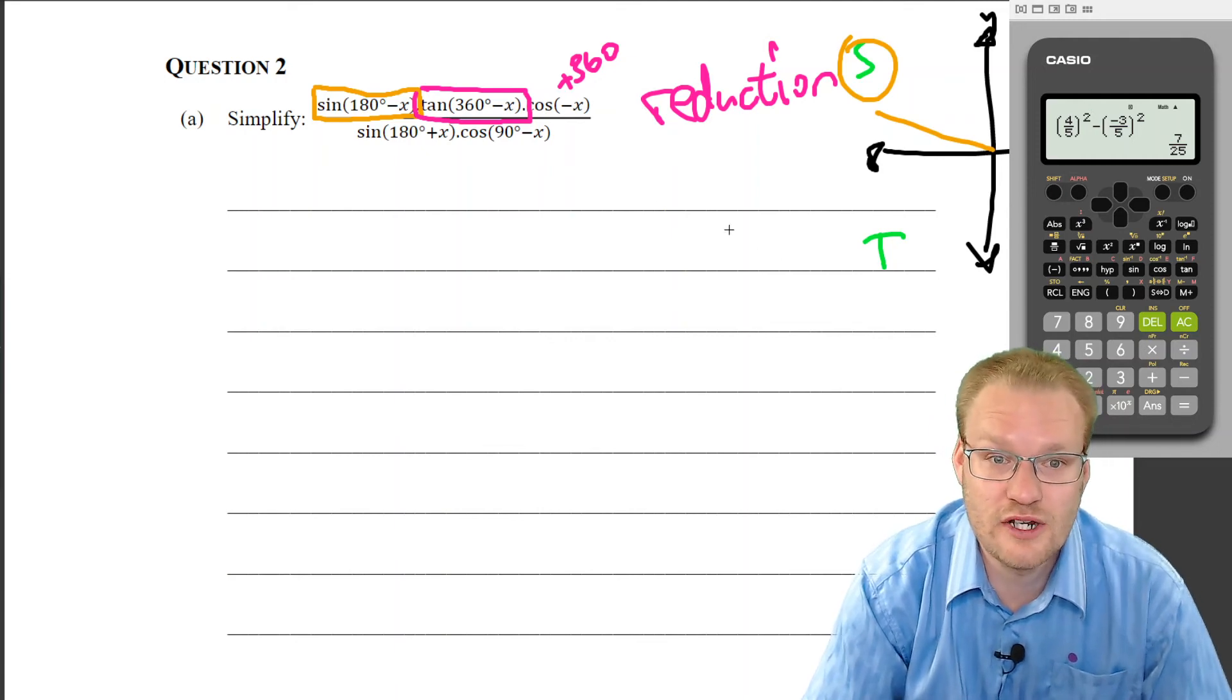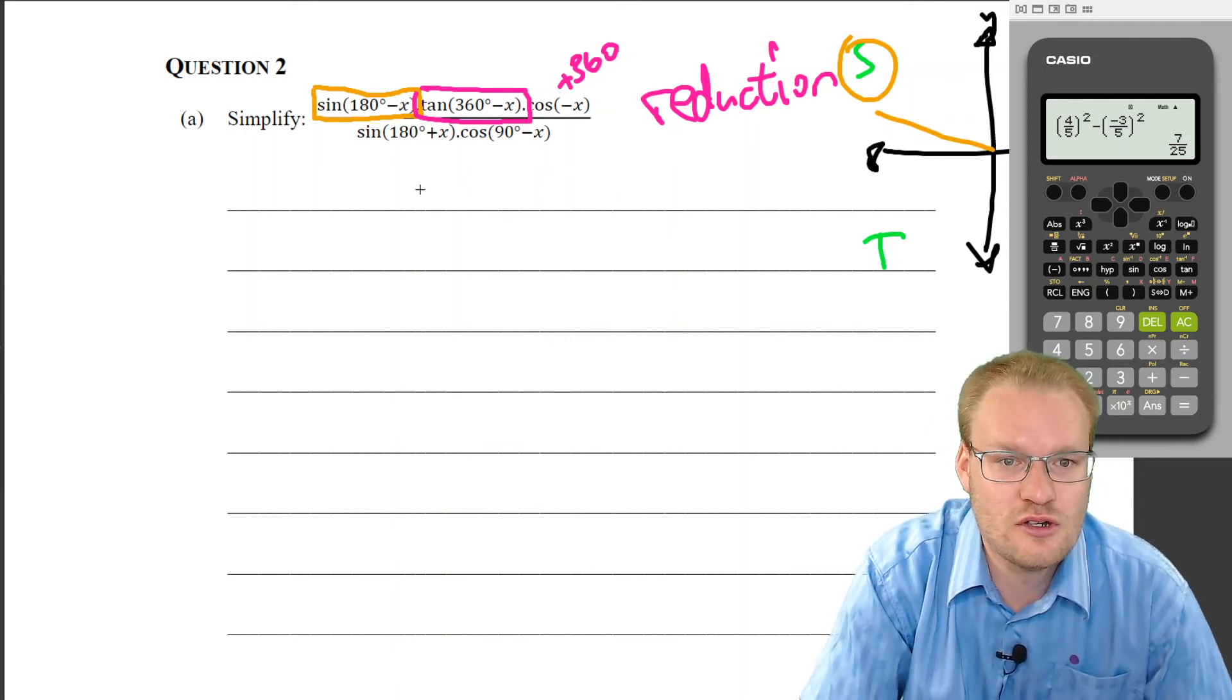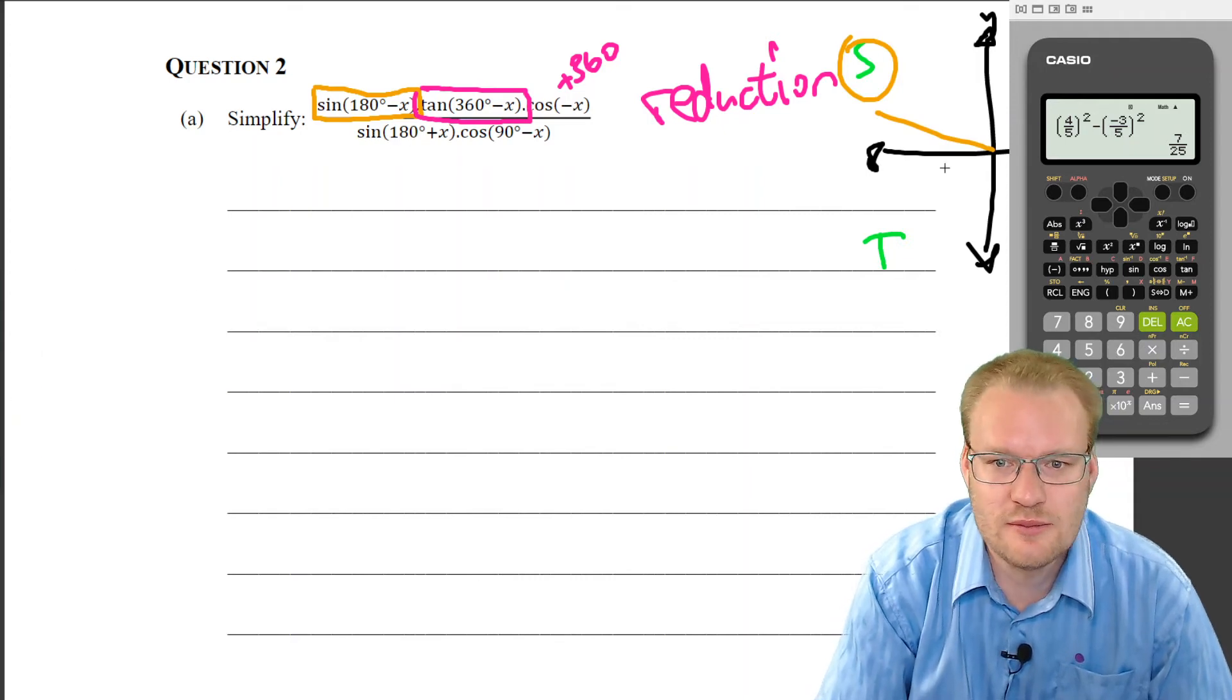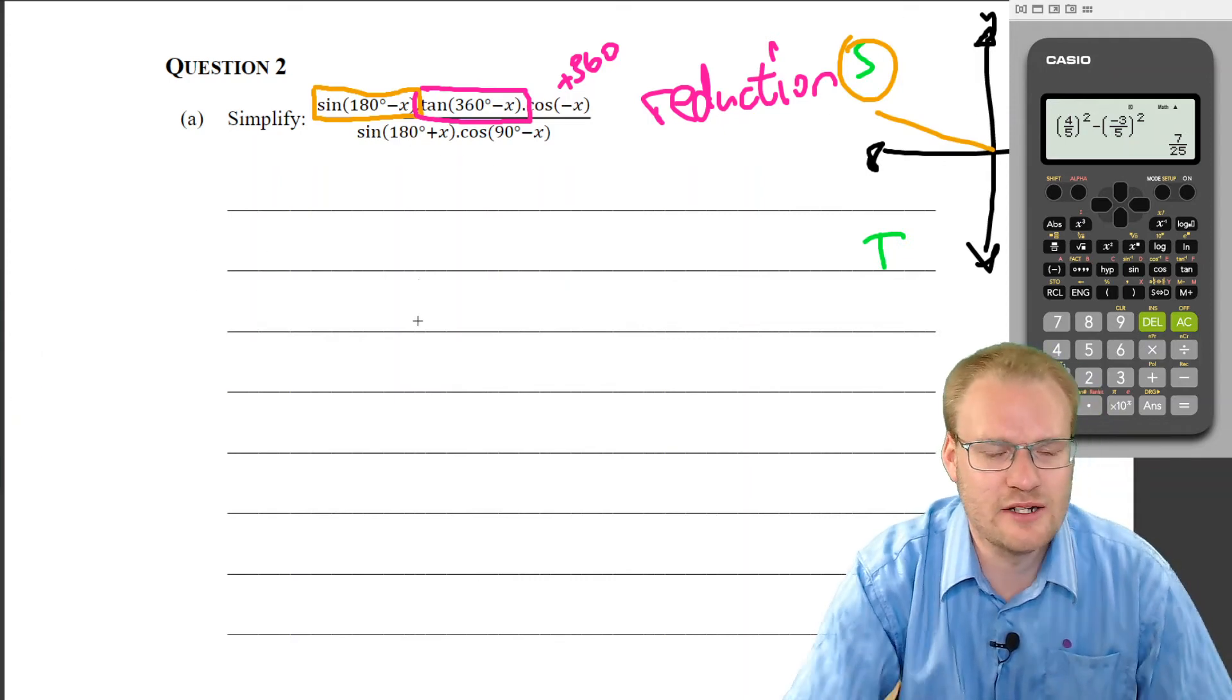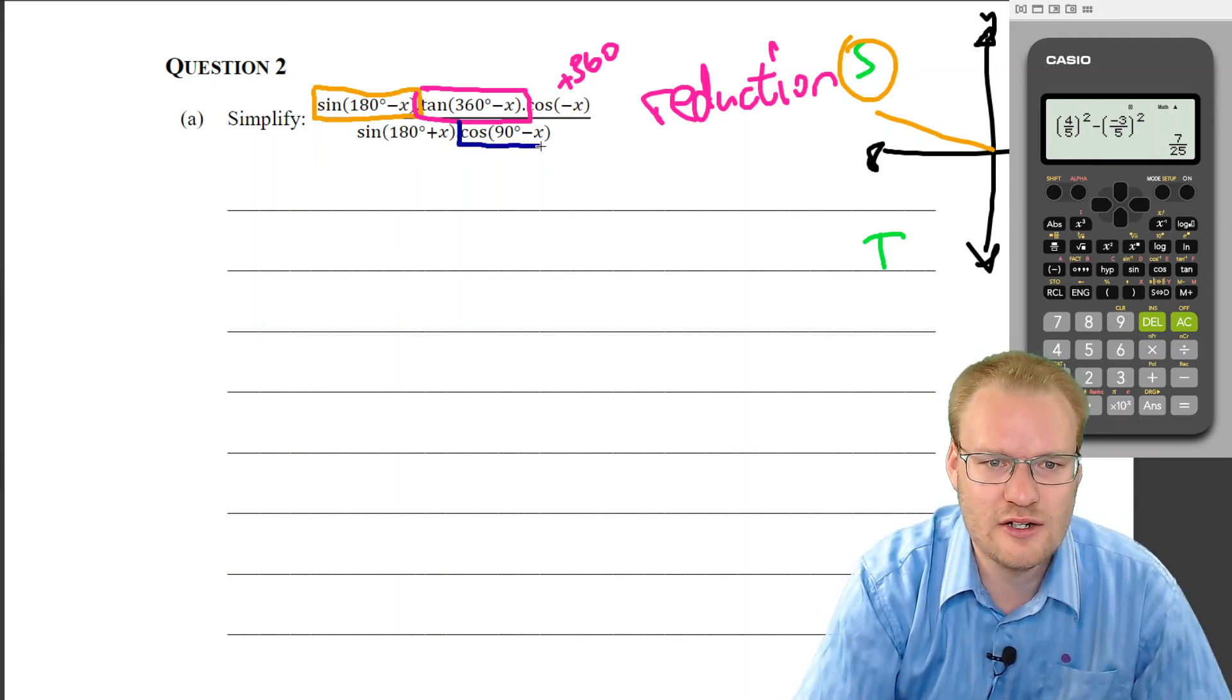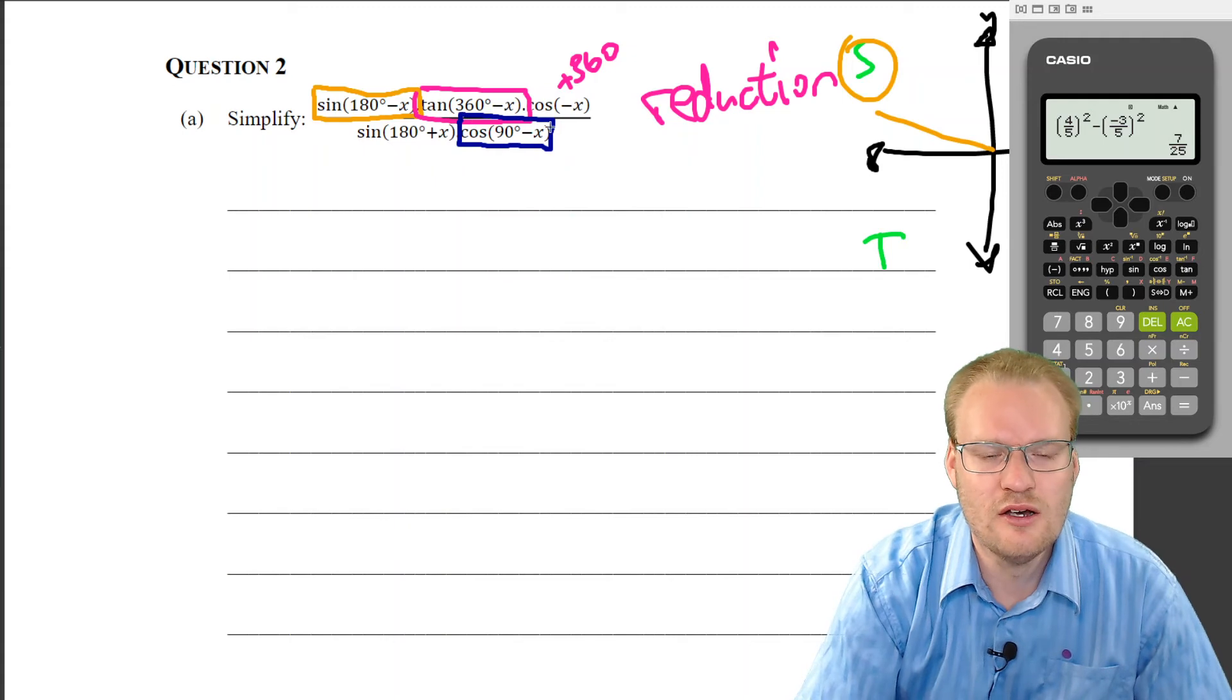Then just work out positive or negative. Sine 180 plus, that's going to be a similar thing: which quadrant. And then the 90 minus, that's the only one to really just think about. How did 90 minus work again?